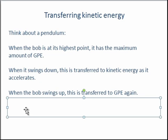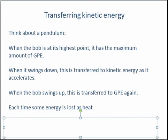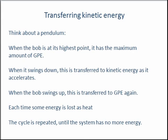But why doesn't this go on forever? Well, the answer is, each time the bob swings, some energy is lost as heat. So in each of the swings, some of the energy is transferred to the environment as heat. And as the cycle is repeated, all of the energy will eventually be lost and the bob will no longer swing.